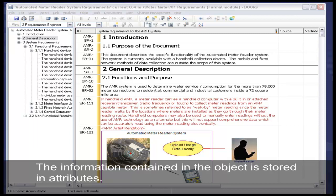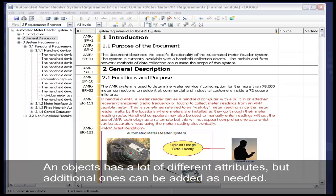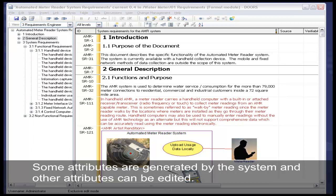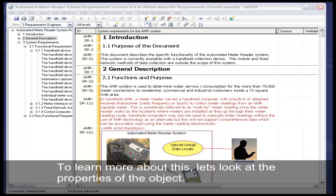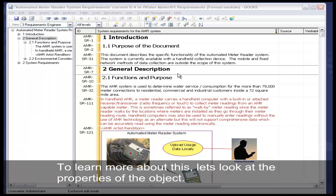The information contained in the object is stored in attributes. An object has lots of different attributes, but additional ones can be added as needed. Some attributes are generated by the system and other attributes can be edited. To learn more about this, let's look at the properties of the object.